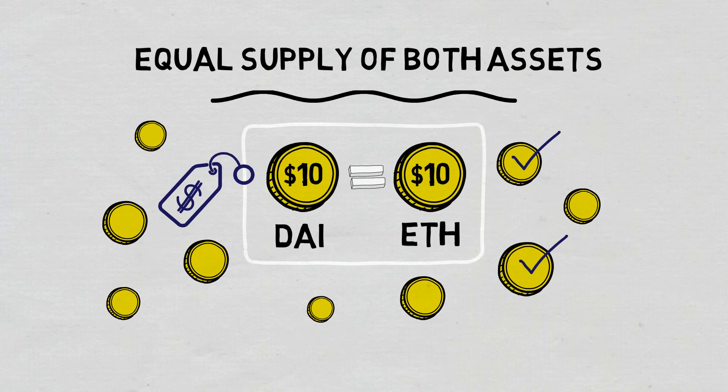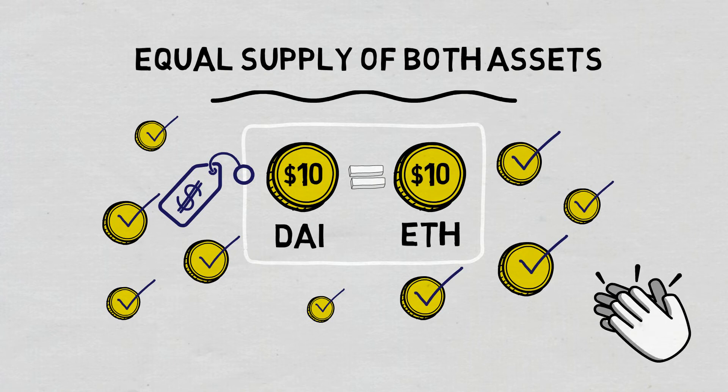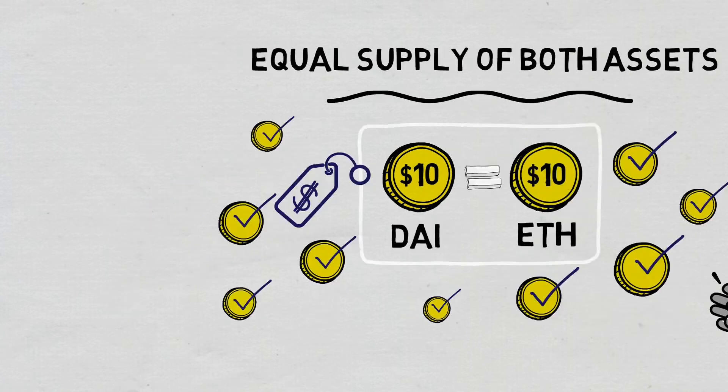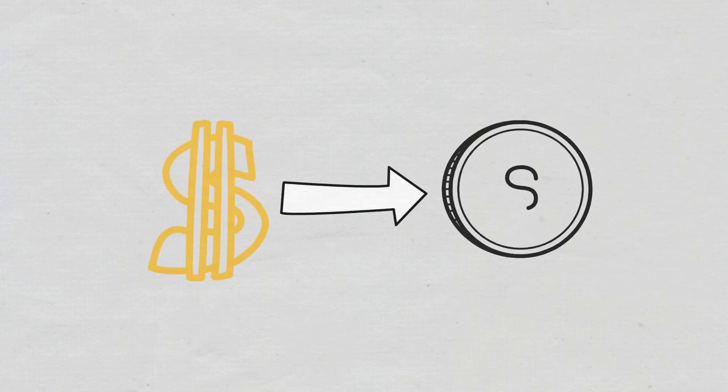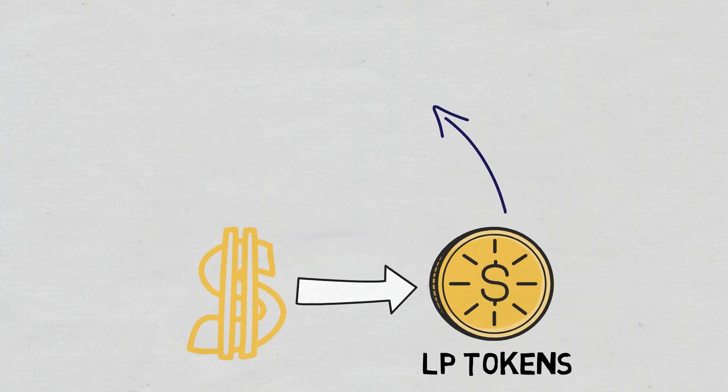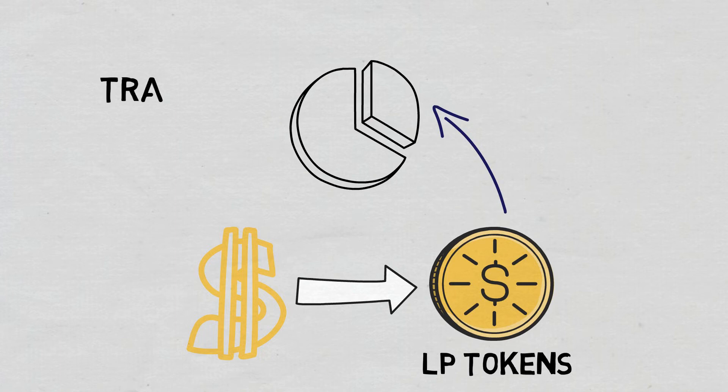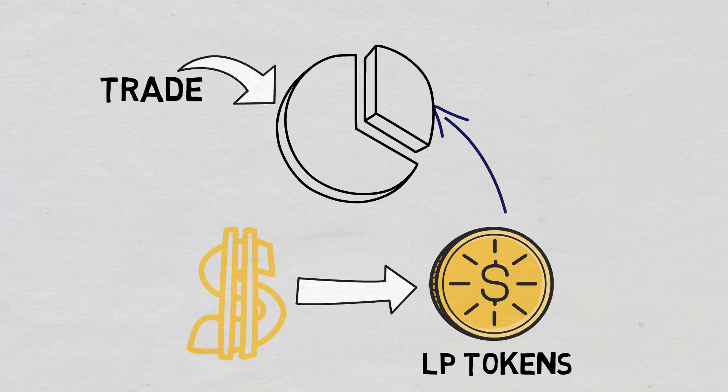Since anyone can be a liquidity provider, as long as they have the correct assets for the platform of choice, AMMs have made market-making significantly more accessible. In exchange for providing their funds, liquidity providers earn special tokens called LP tokens, which are proportional to their share of the total liquidity. Whenever a trade is facilitated, a transaction fee is proportionally distributed among all liquidity providers.